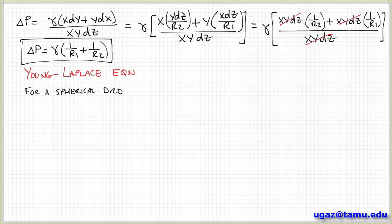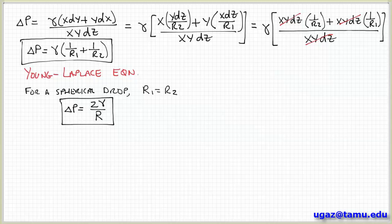For a sphere, so we looked before at a general curve shape that could be expressed in terms of two independent radii of curvature. For a spherical drop, if the shape is a sphere, then there's one radius of curvature. So r1 equals r2. And the equation simplifies here. So this is the form of the Young-Laplace equation for a sphere.